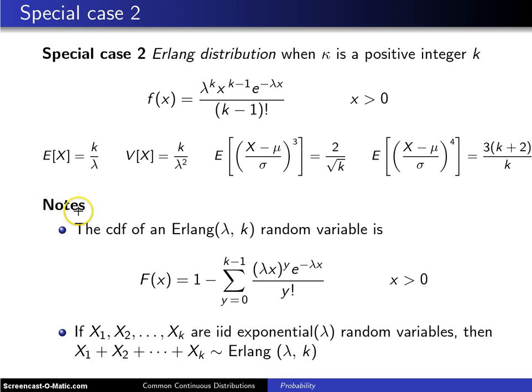A couple notes: even though the gamma distribution does not have a closed form cumulative distribution function, the cdf of an Erlang(lambda, k) random variable can be written as a summation, so it is slightly better than the general gamma distribution.